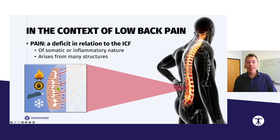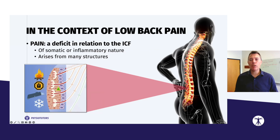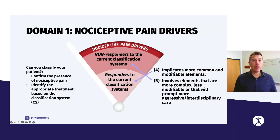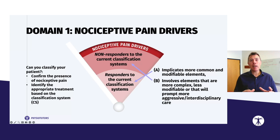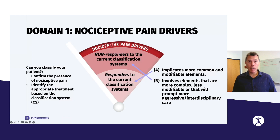In the context of low back pain and many other musculoskeletal conditions, nociception would be mainly somatic and can arise from many potential body structures where nociceptors are activated. Can you classify your patient using a classification system — whether it's the McKenzie classification system, treatment-based classification system, or others? If you can classify your patient, you have a responder and you'll probably be able to identify specific exercises. If you're not able to classify them, because we know we cannot classify 100% of patients 100% of the time, then you'll have a non-responder.